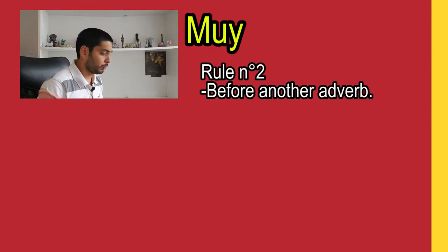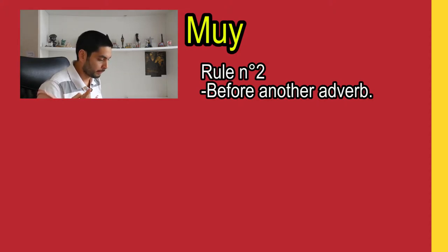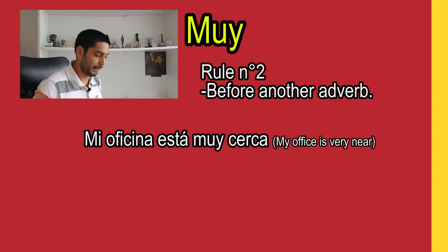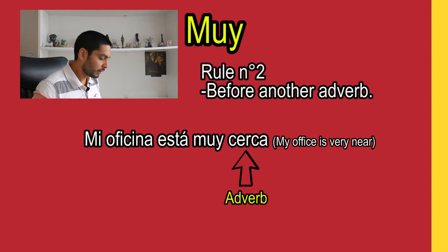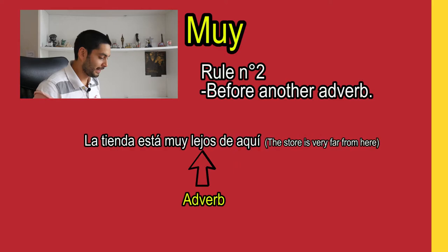Second rule: we use muy before another adverb — words that add information to the verb. For example, we could say mi oficina está muy cerca — my office is very near. Cerca, in this case, is an adverb of distance. Another example: the store is very far from here — since far is an adverb, we say la tienda está muy lejos de aquí.